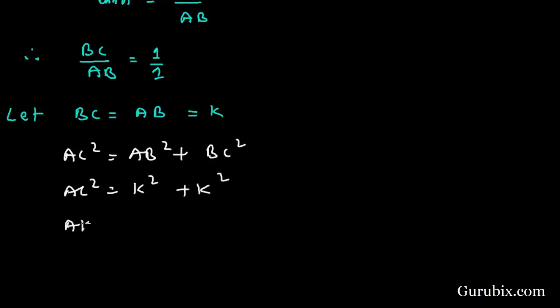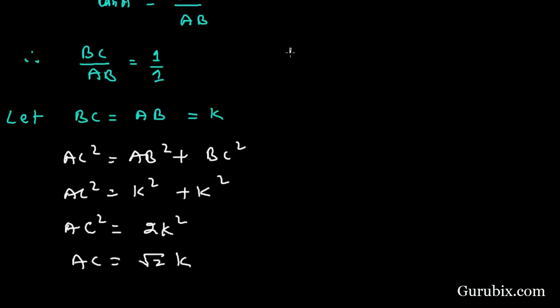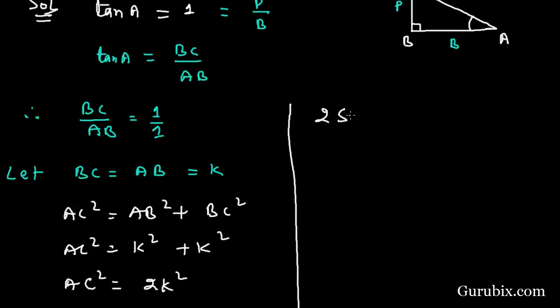This means AC square is equal to 2K square. So AC is equal to square root of 2K. And now we shall find out the value of 2 sin A cos A.